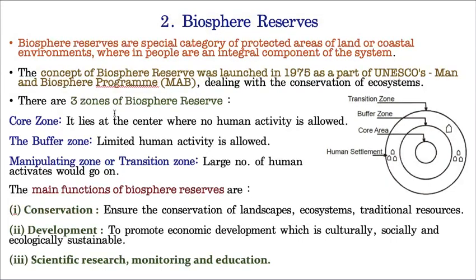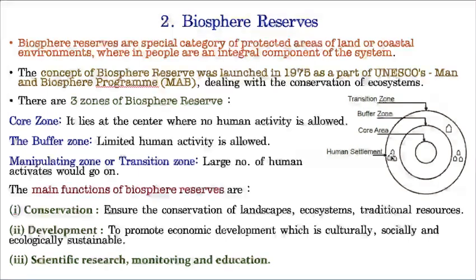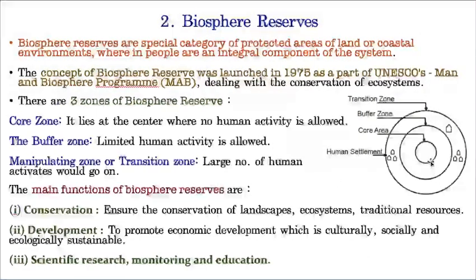The three zones of a biosphere reserve are: the core zone - the innermost zone where human activities are absolutely not allowed; the buffer zone - the second zone where limited human activities are allowed; and the manipulation zone, also called the transition zone, where large human activities can be seen and even small villages can be established. So one biosphere reserve consists of a core zone with no human activities, a buffer zone with limited activities, and a transition zone with human settlement.